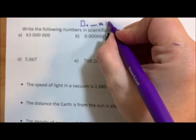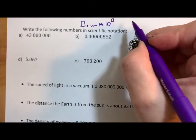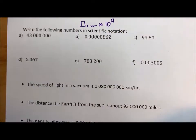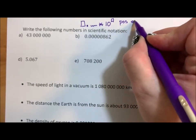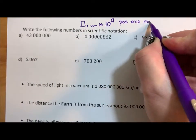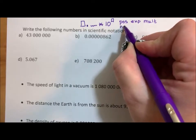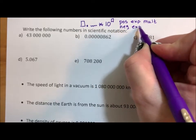Then you use a 10 and it has an exponent. A positive exponent means you're multiplying by 10, and a negative exponent means you're dividing. So positive exponent is multiplying, negative exponent dividing.